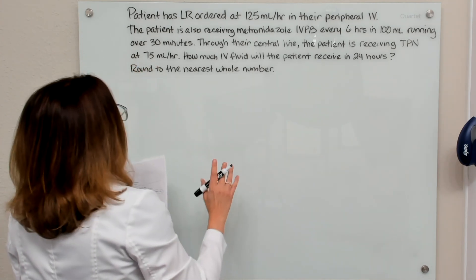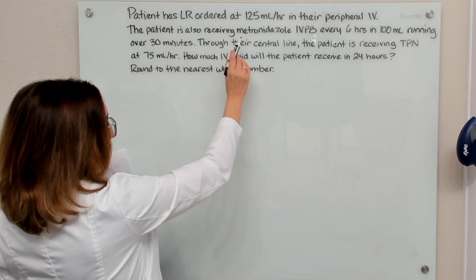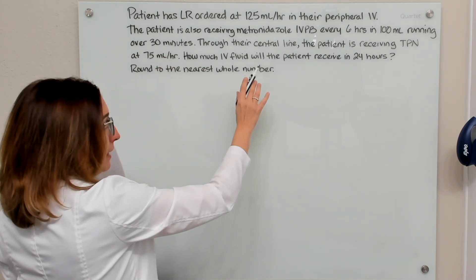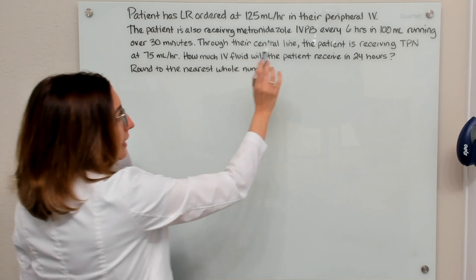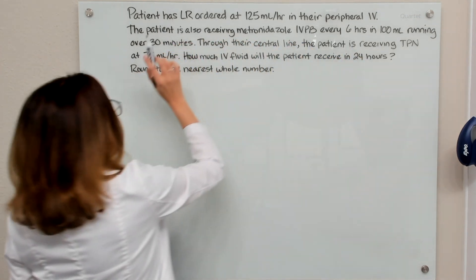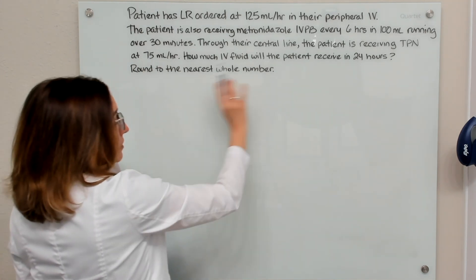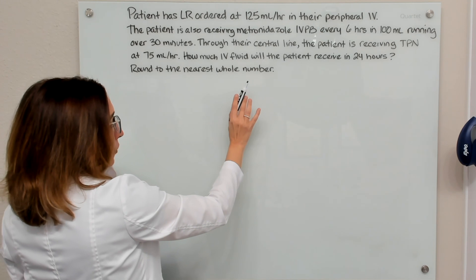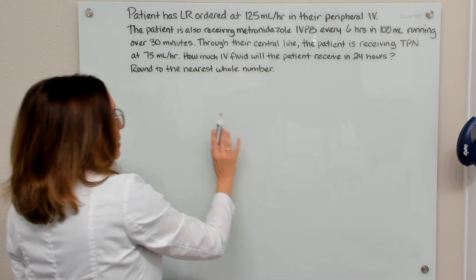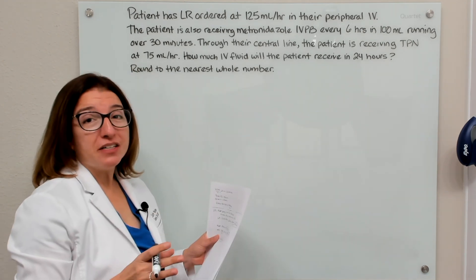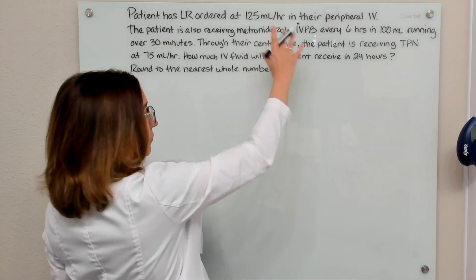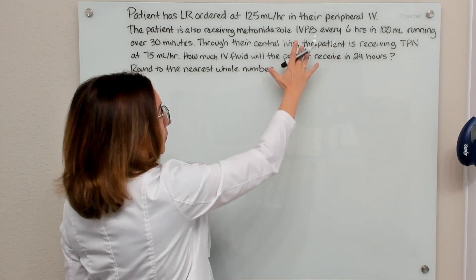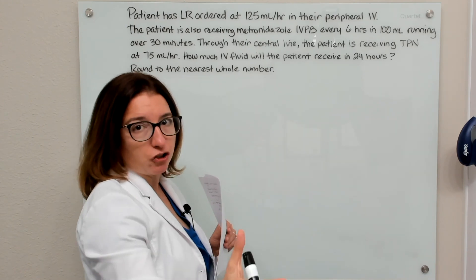In this example, we have a patient with lactated ringers ordered at 125 mLs per hour through their peripheral IV. The patient is also receiving metronidazole IV piggyback through this peripheral IV every six hours in 100 mLs of fluid running over 30 minutes each time. In addition, through their central line, the patient is receiving TPN at 75 mLs per hour. We want to know how much IV fluid the patient will receive in 24 hours, rounded to the nearest whole number.